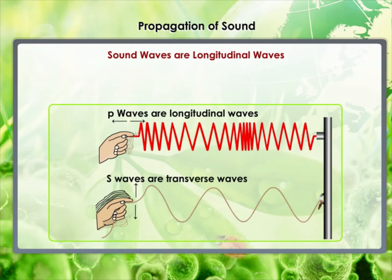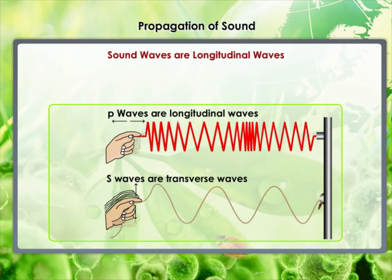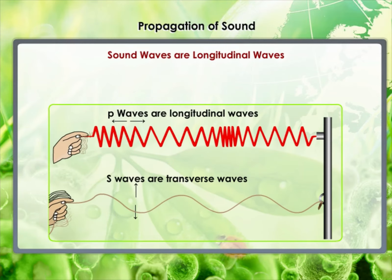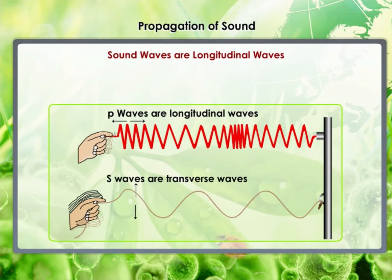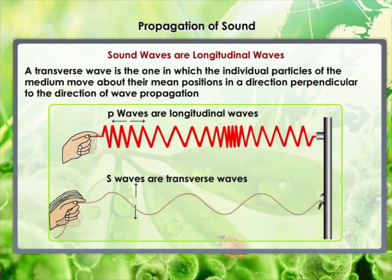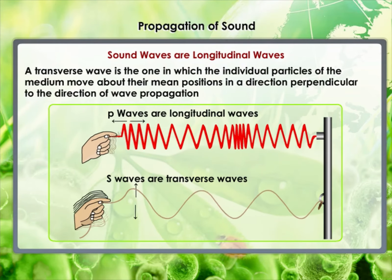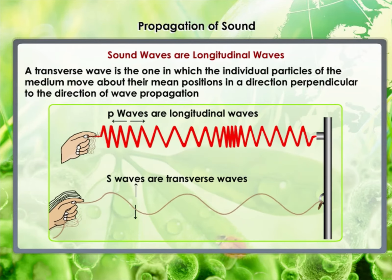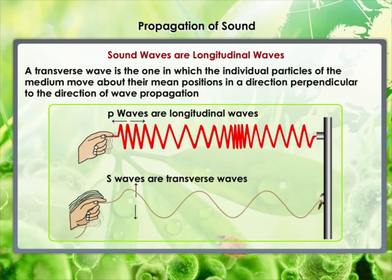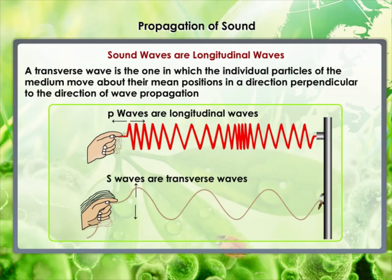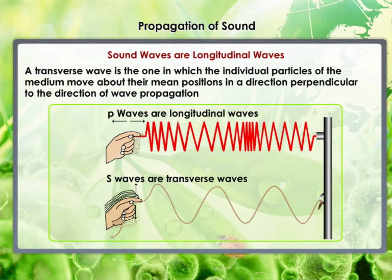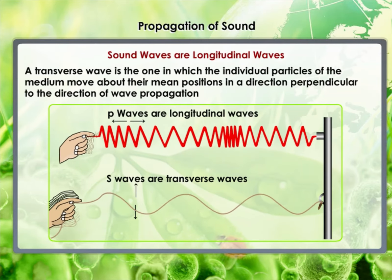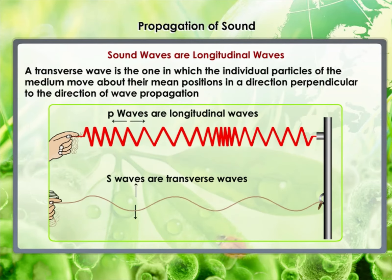There is another type of wave called a transverse wave. In a transverse wave, particles do not oscillate along the line of wave propagation — they oscillate up and down about their mean position as the wave travels. Thus, in a transverse wave, individual particles move perpendicular to the direction of wave propagation. Light is a transverse wave, but for light, oscillations are not of the medium particles or their pressure or density — it is not a mechanical wave.